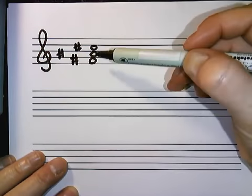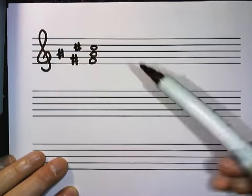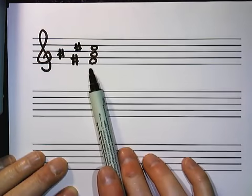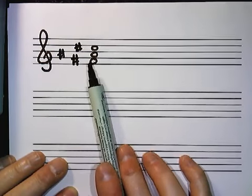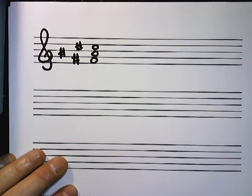So we see F, A, C, but they are all sharped. The root of the chord is the low note, so it's F sharp. So here's how we get the chord quality.